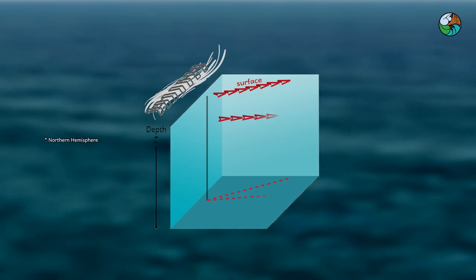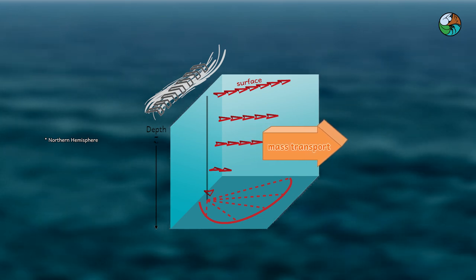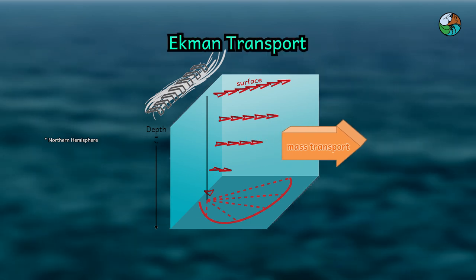The next layer makes an angle with the layer above and has a weaker flow, so on and so forth. The net mass transport of all the layers results in 90 degrees clockwise from the wind direction. It is also called Ekman transport.